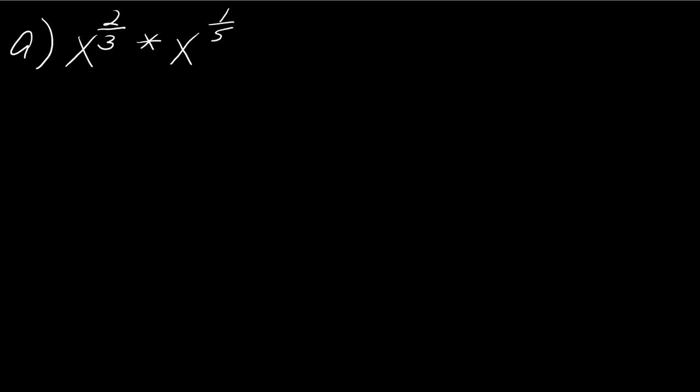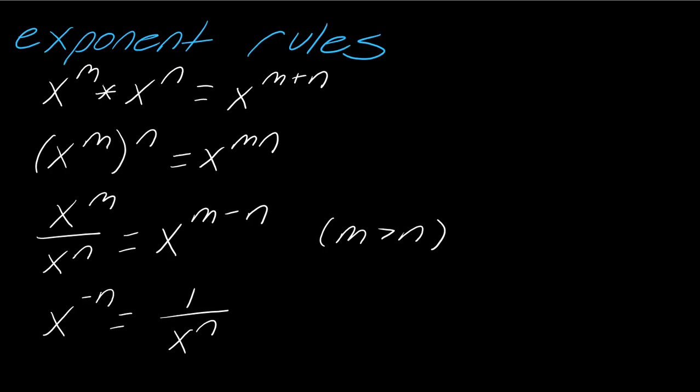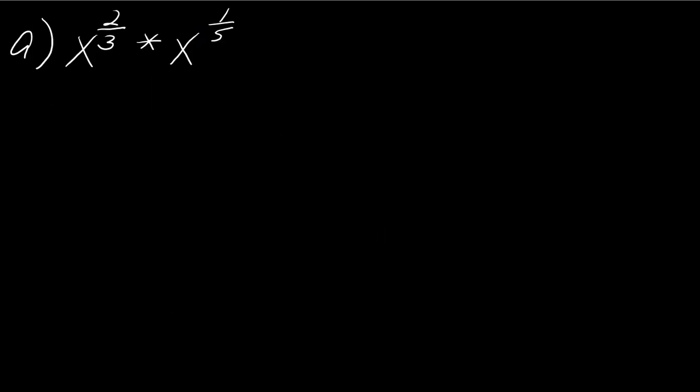And the whole thing with this is that your final answer cannot contain negative exponents. Okay, so here's the kind of stuff that we're looking at. So I have x to the 2 thirds times x to the 1 fifth. So if you are rusty on your exponent rules, you might want to have this sheet maybe just on another sheet of paper next to you. So what I need to do here is I need to add the exponents. So this is going to be really taking 2 thirds plus 1 fifth.